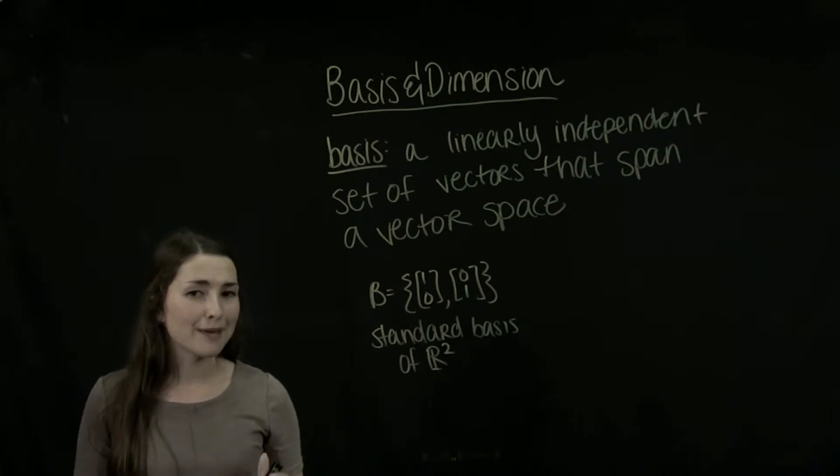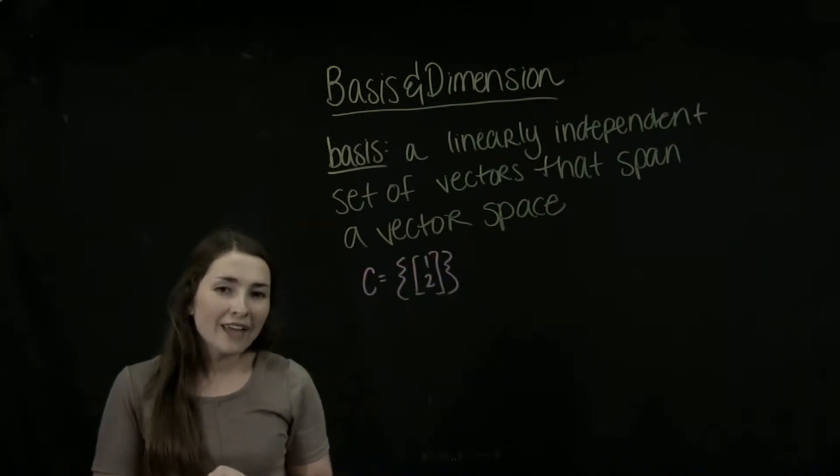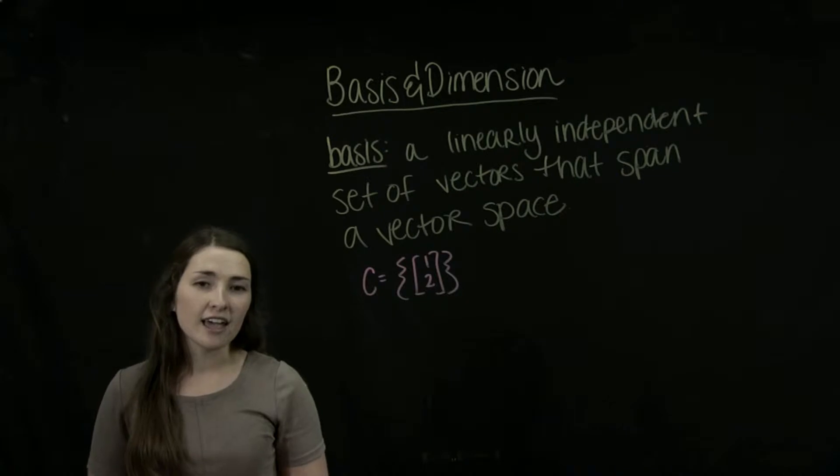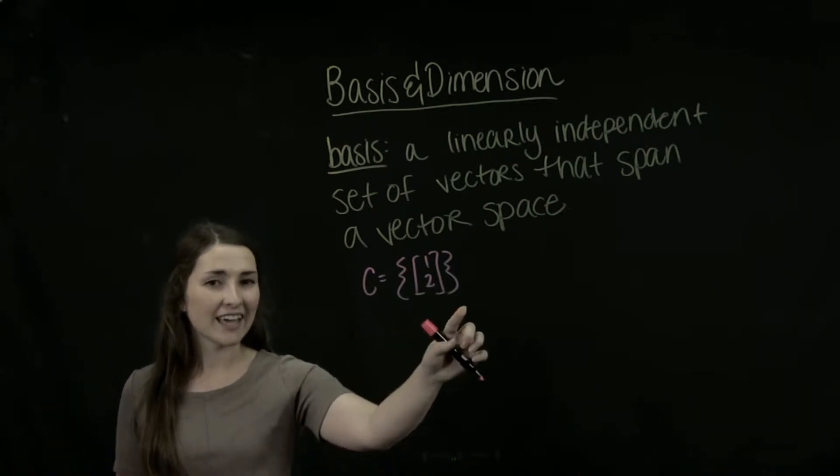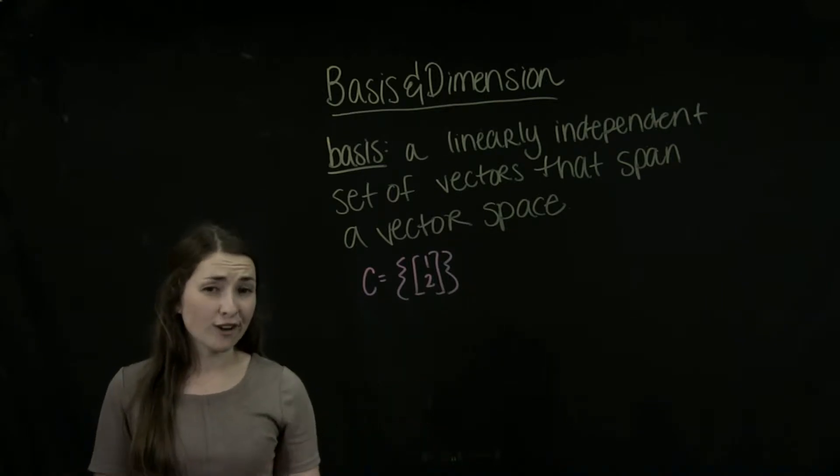So let's look at a couple examples that may not be so trivial. So we have this set here, C, and it contains only one vector, 1, 2. So does this set here, C, is that a basis for R2?